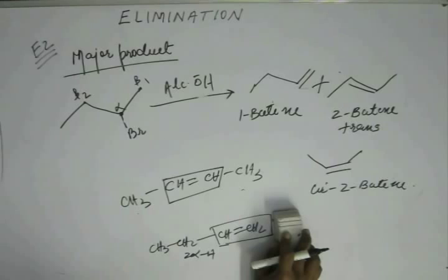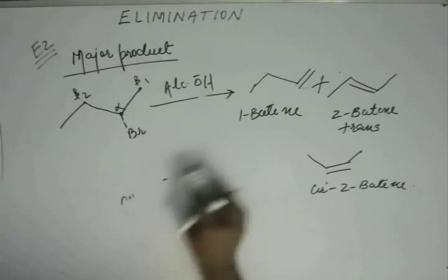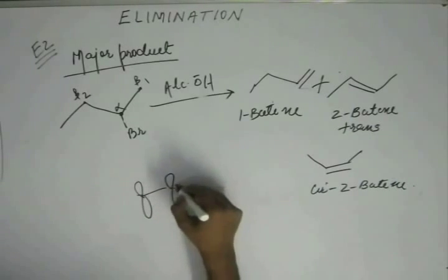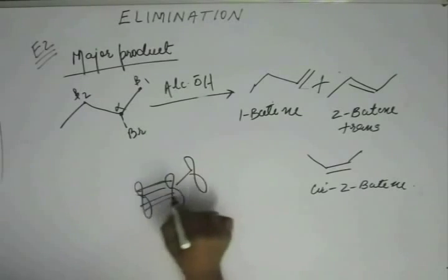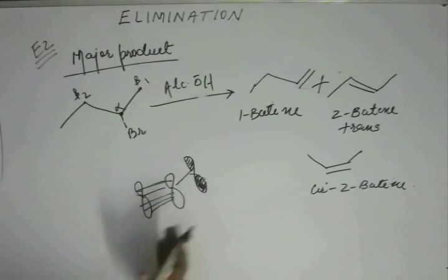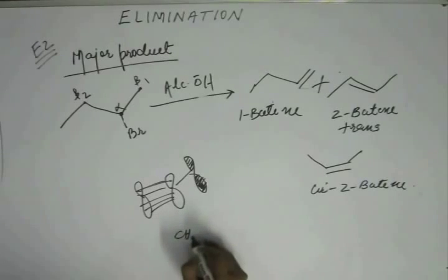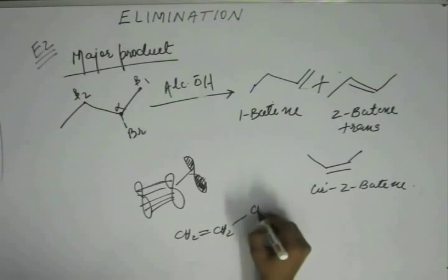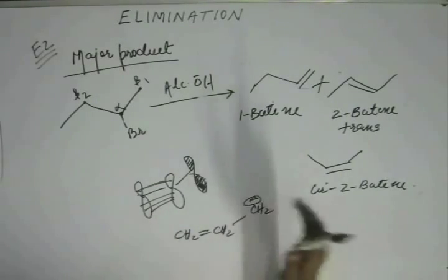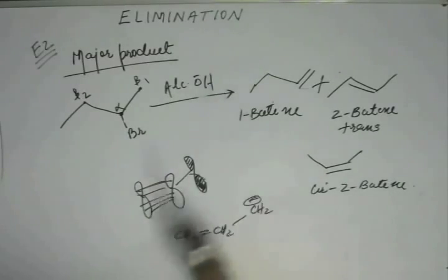Why should more hyperconjugation mean more stability? Because the spread of the electronic wave is greater. Consider why resonance offers stability: if we have a pi bond next to a negative charge — a completely filled orbital — resonance spreads the negative charge throughout the molecule, decreasing electronic charge density and increasing electron flow, which brings stability.